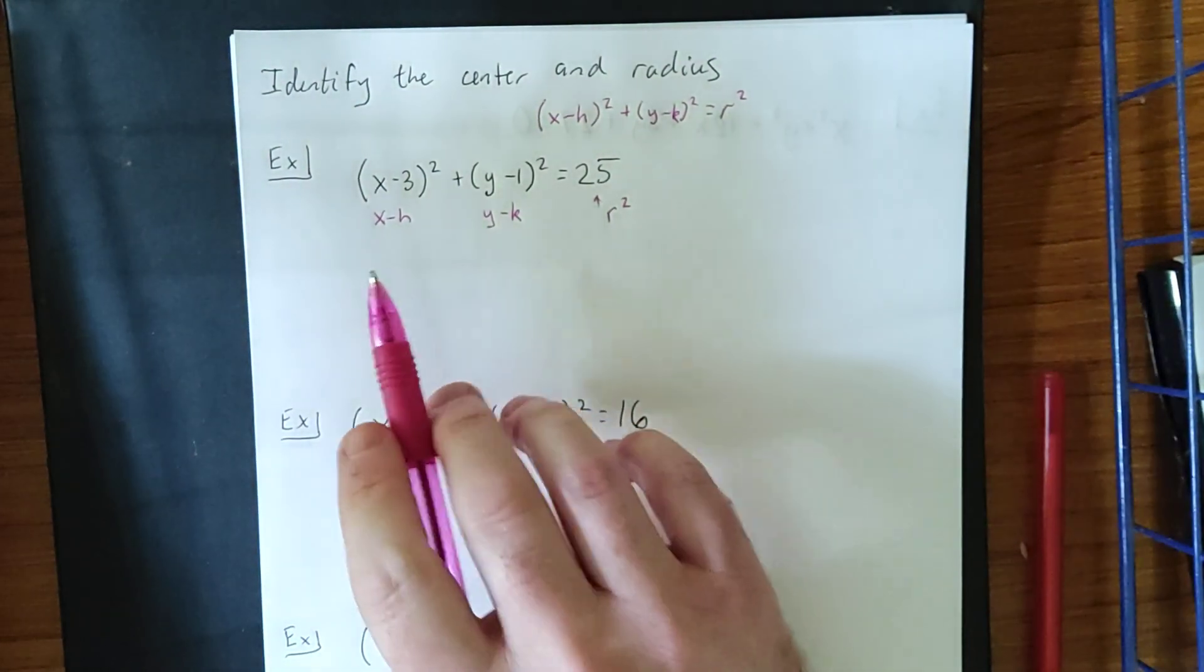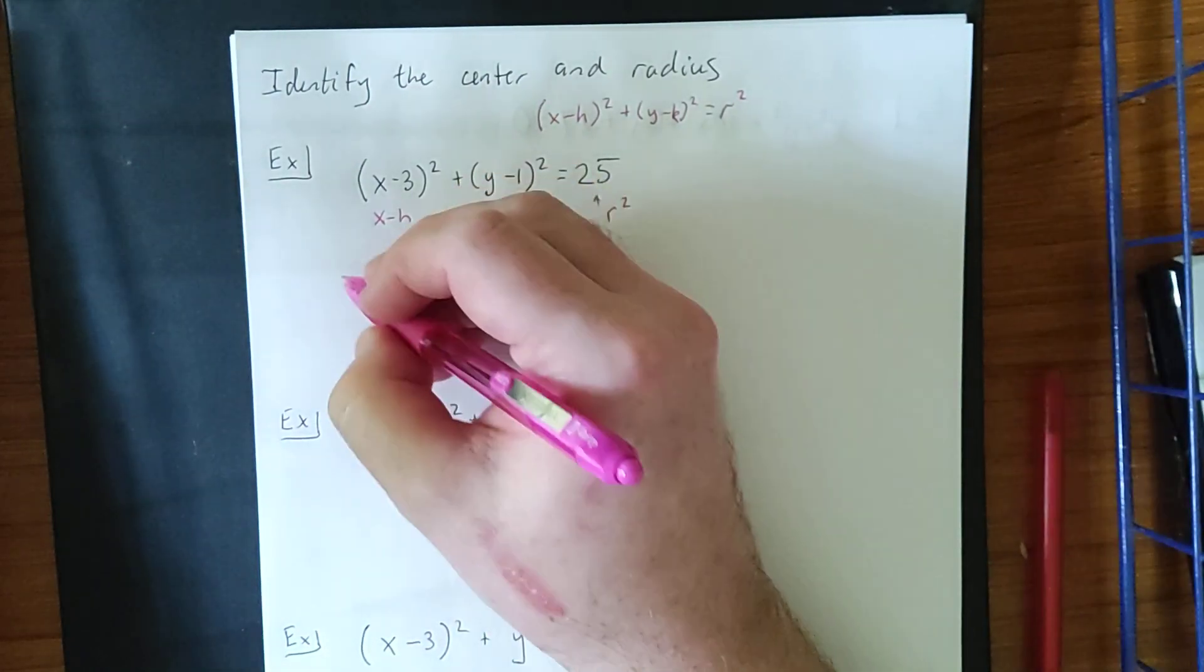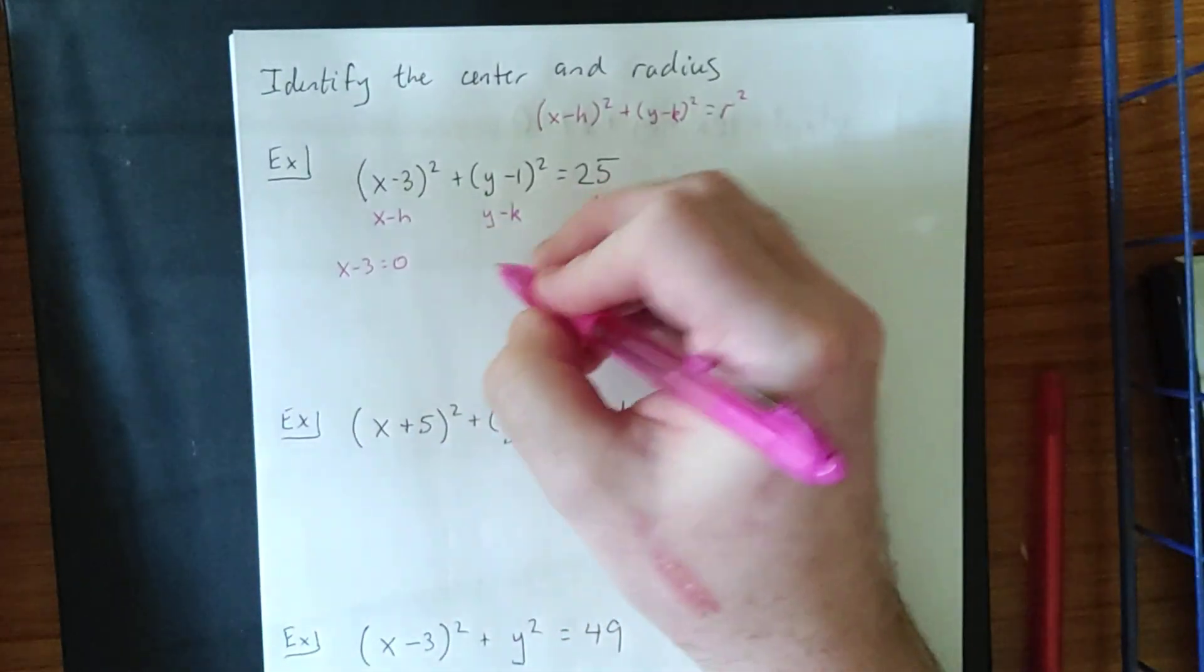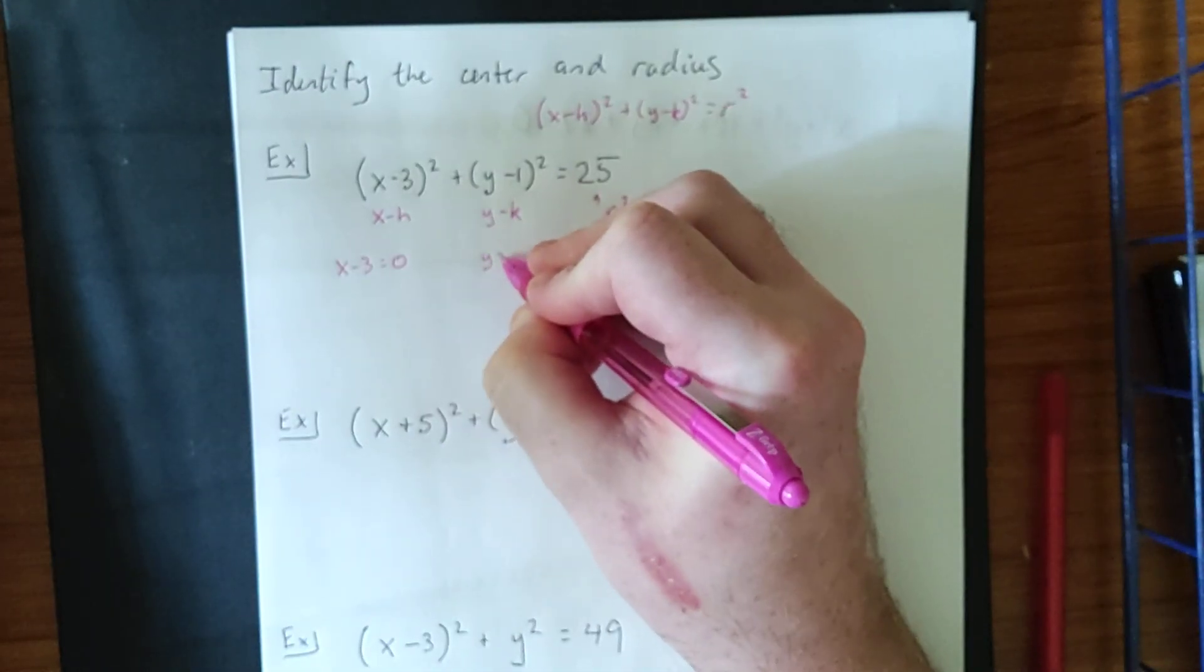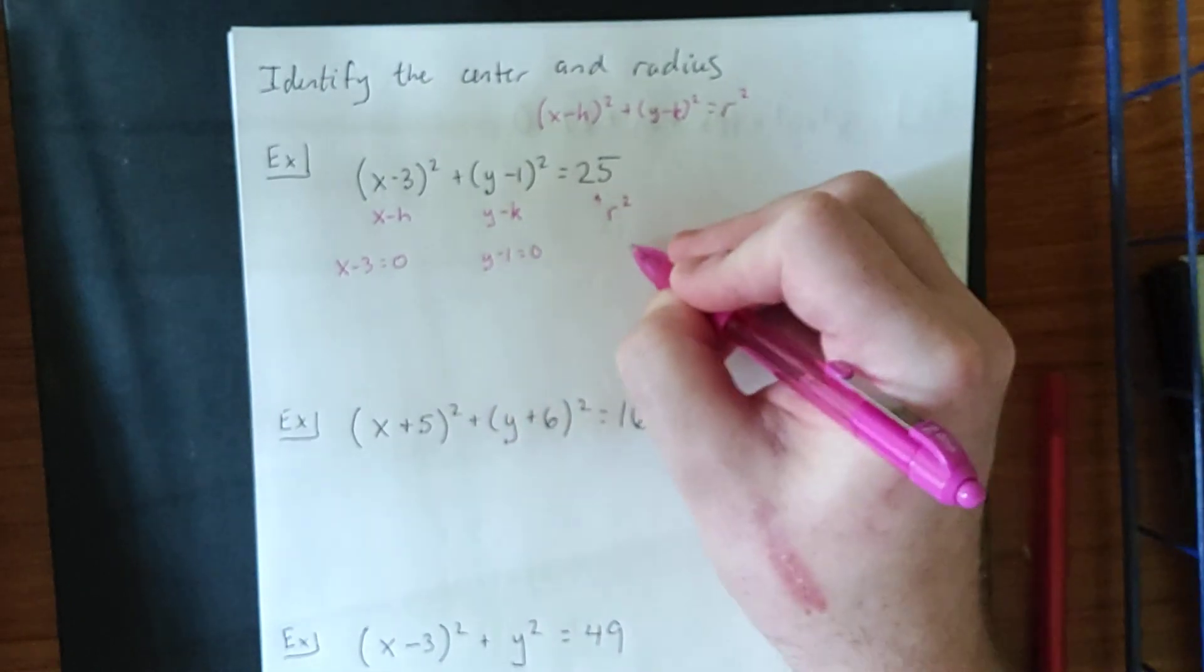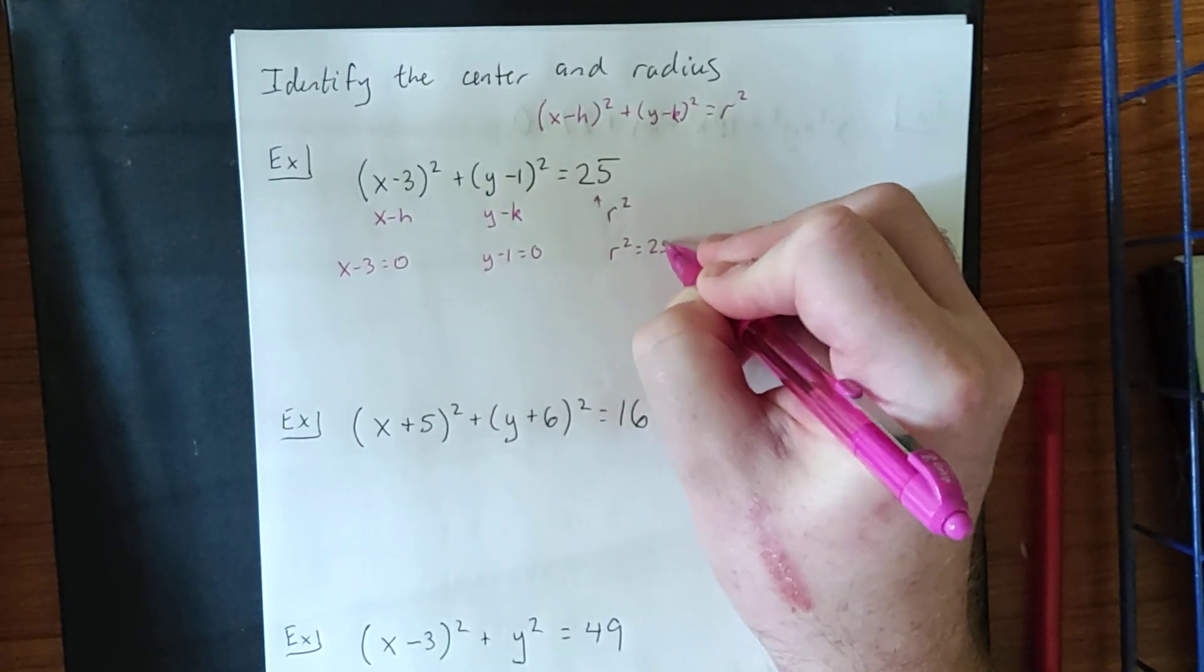Now, one of the tricks that you can get for actually getting this, if you want to get into this mentality, is to say, let's take that x minus 3 and set it equal to 0. Take the y minus 1, set it equal to 0, and take r squared and set it equal to 25.